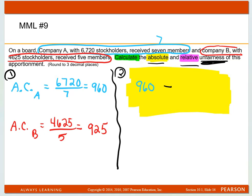And when I do that, I get the answer to absolute unfairness, which ends up being 35. So 35 will be the first number you put into MyMathLab, and you get a positive affirmation for that.